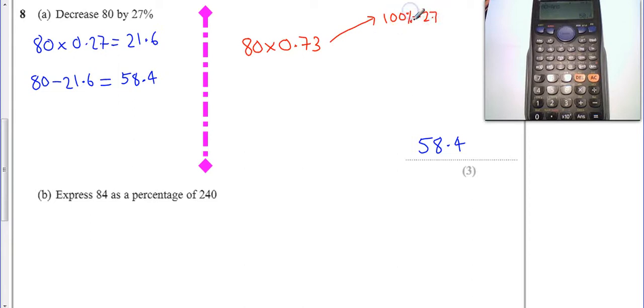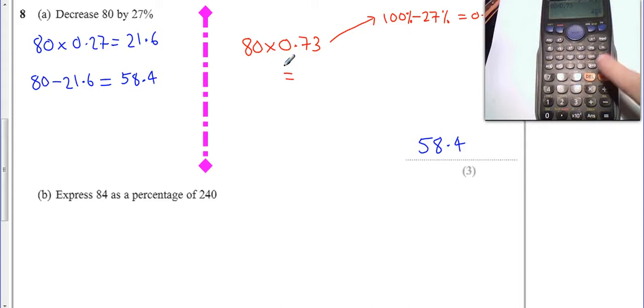Now if I just do that on my calculator, 80 times 0.73, because I've taken off my 27%, equals—I have a feeling we might have lost calculator cam just a sec.